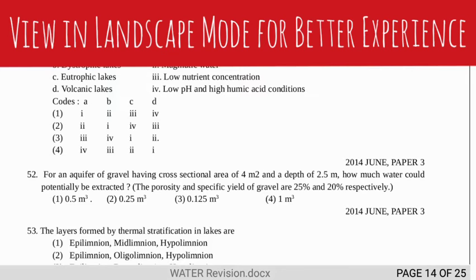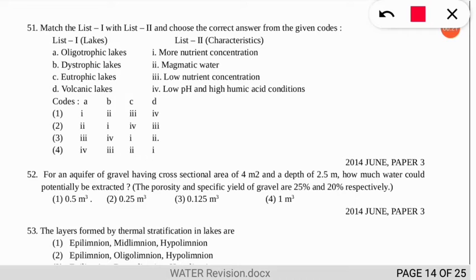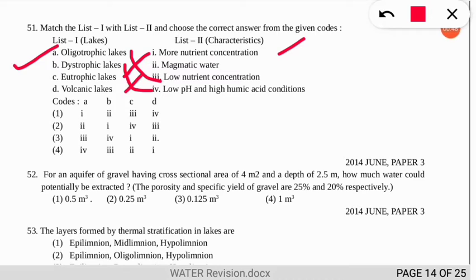Question 51 is about matching lake types with their characteristics. Oligotrophic lakes have low nutrient concentration, so A matches with option 3. Dystrophic lakes have low pH and high humic conditions, matching option 4. Eutrophic lakes have high nutrient concentration, and volcanic lakes have magmatic water. Accordingly, option number 3 is the correct answer for this question.